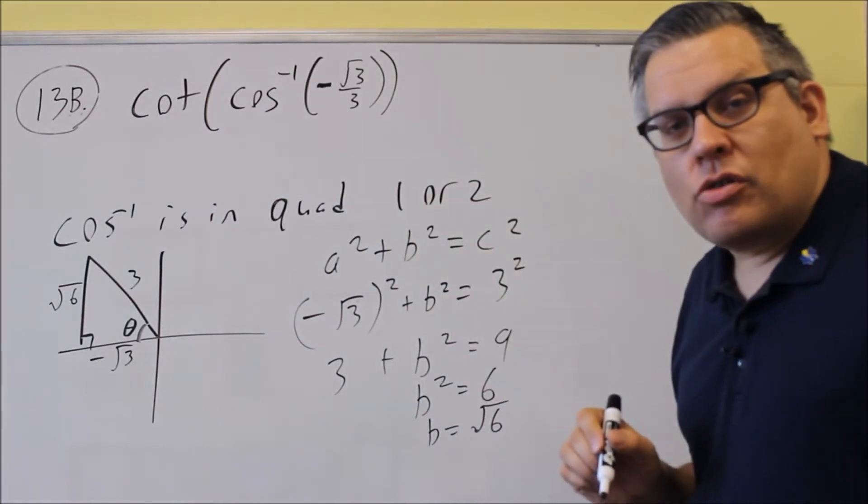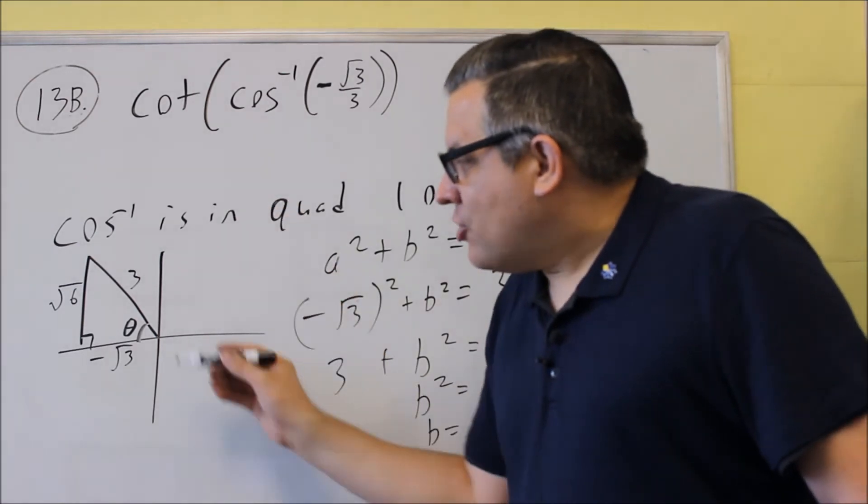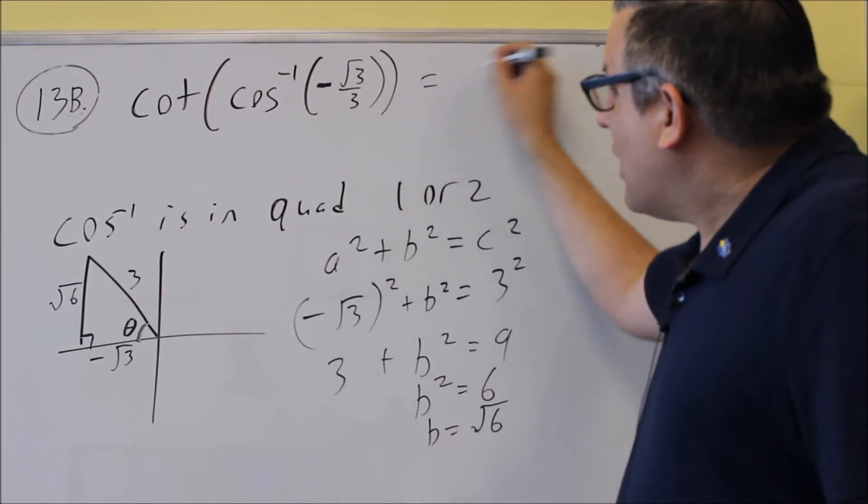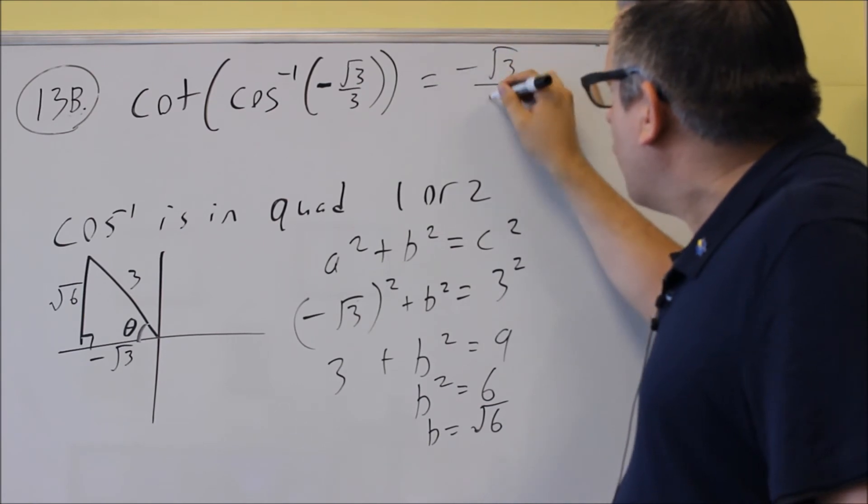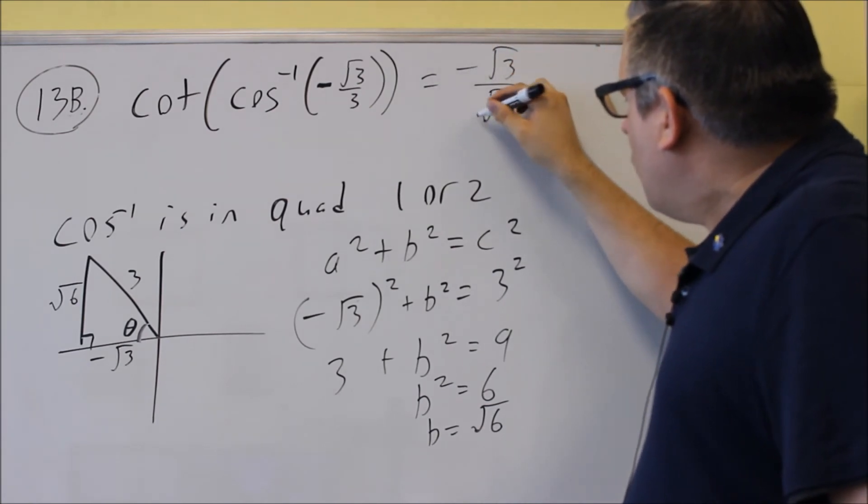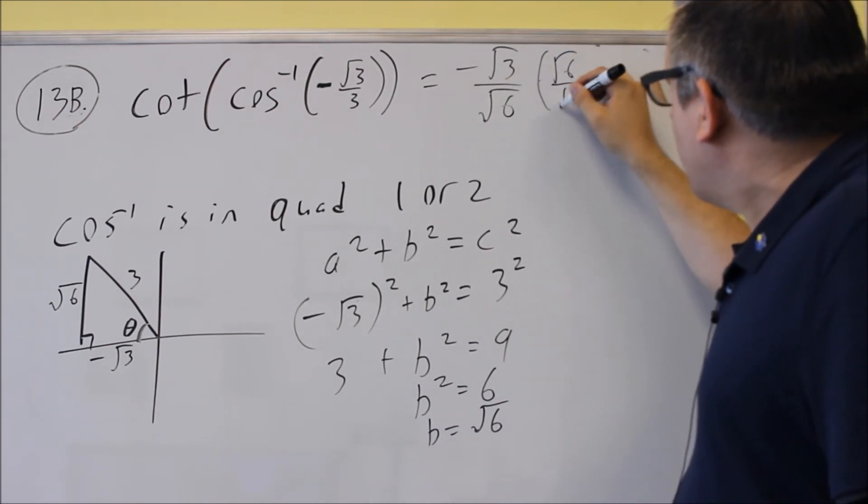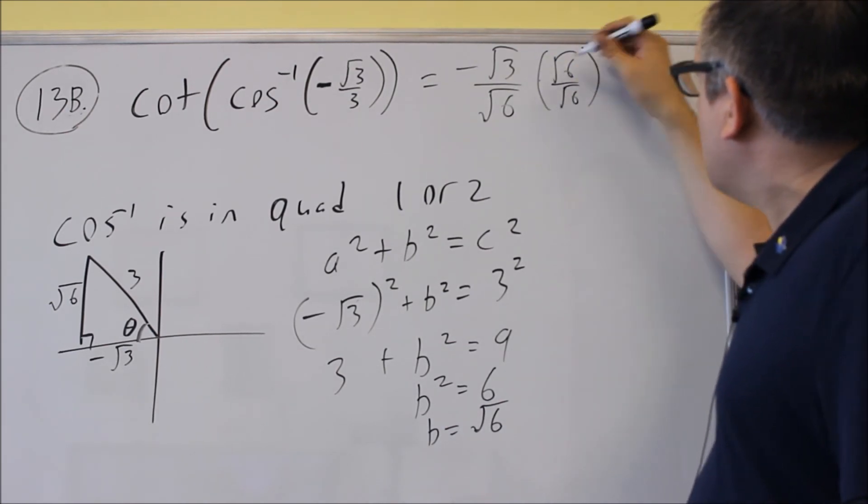Cotangent is equal to the adjacent over opposite is the definition for that. So, adjacent would be negative square root of 3 over opposite, which is square root of 6. We're going to multiply top and bottom by square root of 6 over square root of 6 because we want to rationalize these.